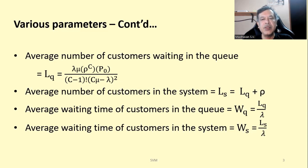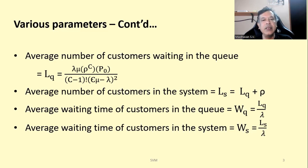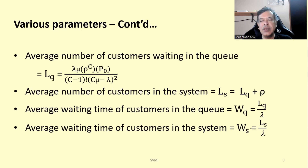The average number of customers in the system can be calculated as L_s equal to L_q plus rho, where rho is the utilization factor. Rho can be evaluated as lambda divided by mu, meaning arrival rate divided by service rate. The average waiting time of customers in the queue is W_q equal to L_q divided by lambda. The average waiting time of customers in the system is W_s equal to L_s divided by lambda.